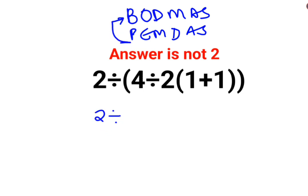So we keep 2 divided by as it is. First, let's solve this entire bracket. We have 4 divided by 2. The inside bracket is what? 1 plus 1. That is also 2.